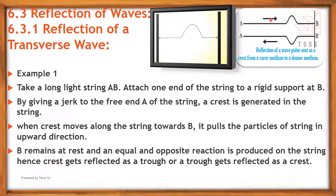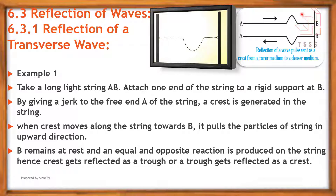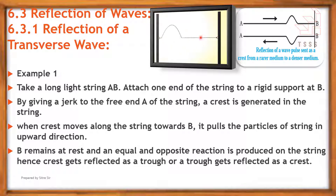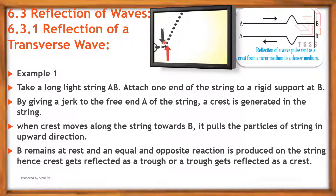Hence, a crest gets reflected as a trough, or a trough gets reflected as a crest. When a wave is incident on a denser medium, there is a phase change of π radians on reflection.